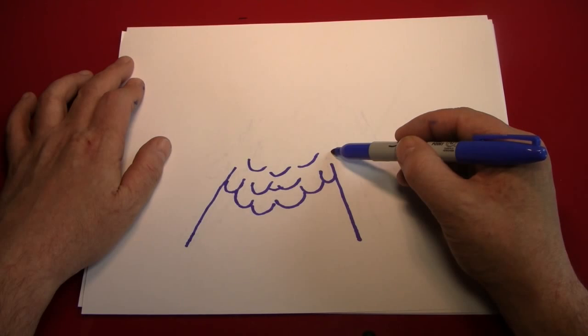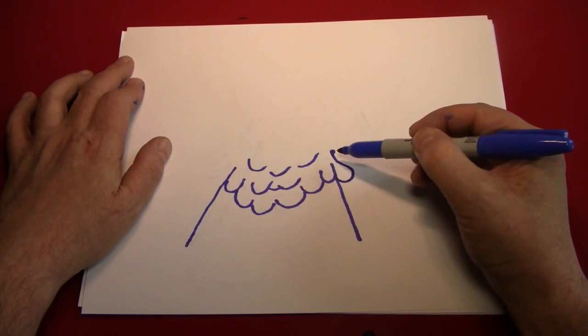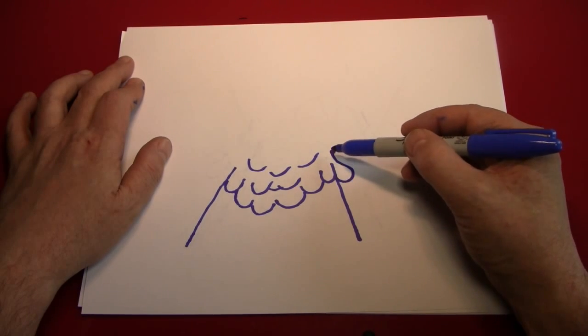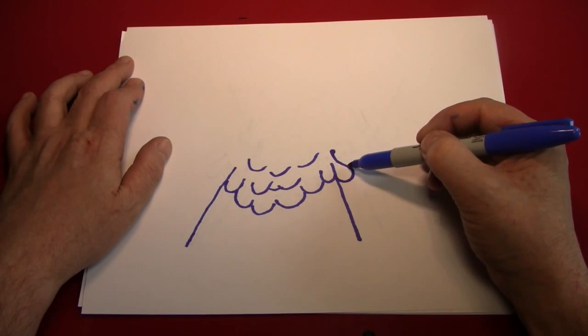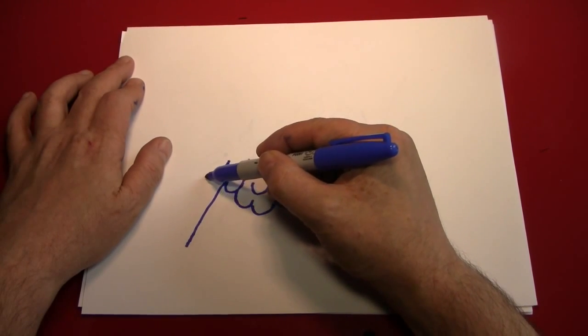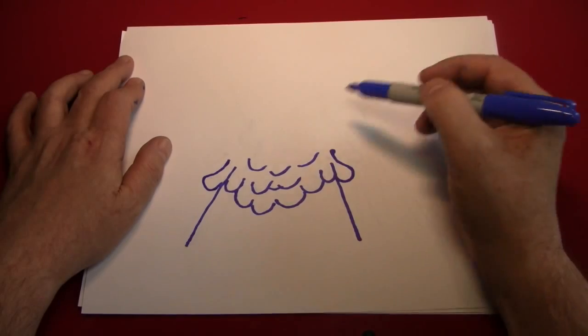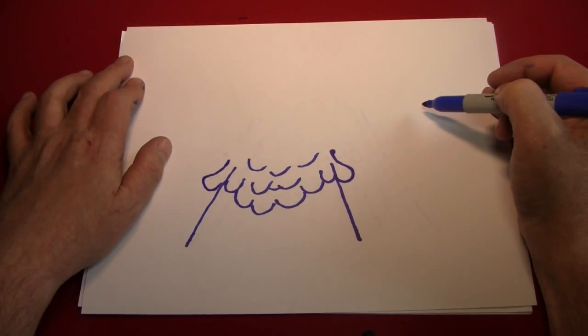Then we should put some lava on the side of the volcano. You can do that by making this shape. Sort of starting just a little bit above, coming out, back in, and up a little bit. Do that on both sides. And hey, we've got lava coming out of our volcano.